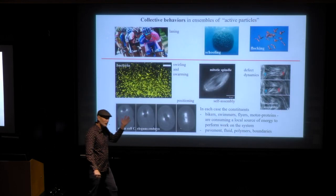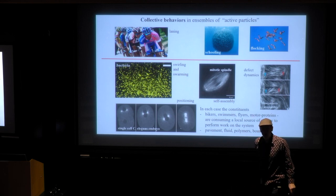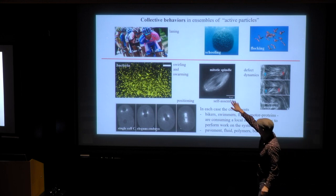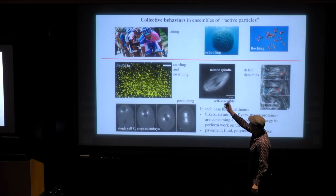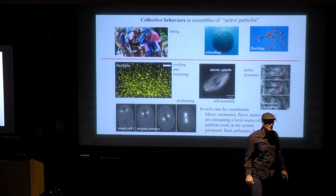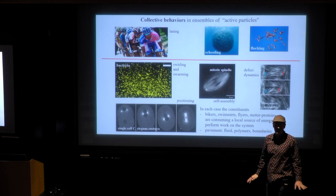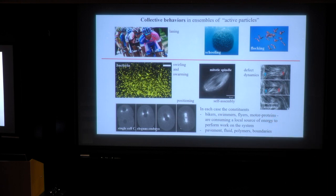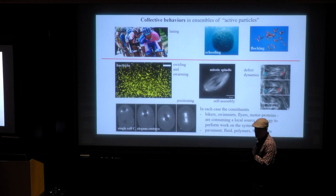Here is the standard active matter introductory slide. I'm going to talk about collective behaviors in ensembles of active particles, divided into inertially dominated versus viscously dominated systems. In the inertially dominated regime, we have laning by bicyclists, schooling of fish — fish balls are really beautiful collective behavior which is not well understood — and flocking, which can be both behavioral and driven by hydrodynamic interactions of vortices shed into the fluid. These are all very high Reynolds number instances, much more difficult to handle because you shed vortices into the fluid that other elements in the ensemble must contend with.